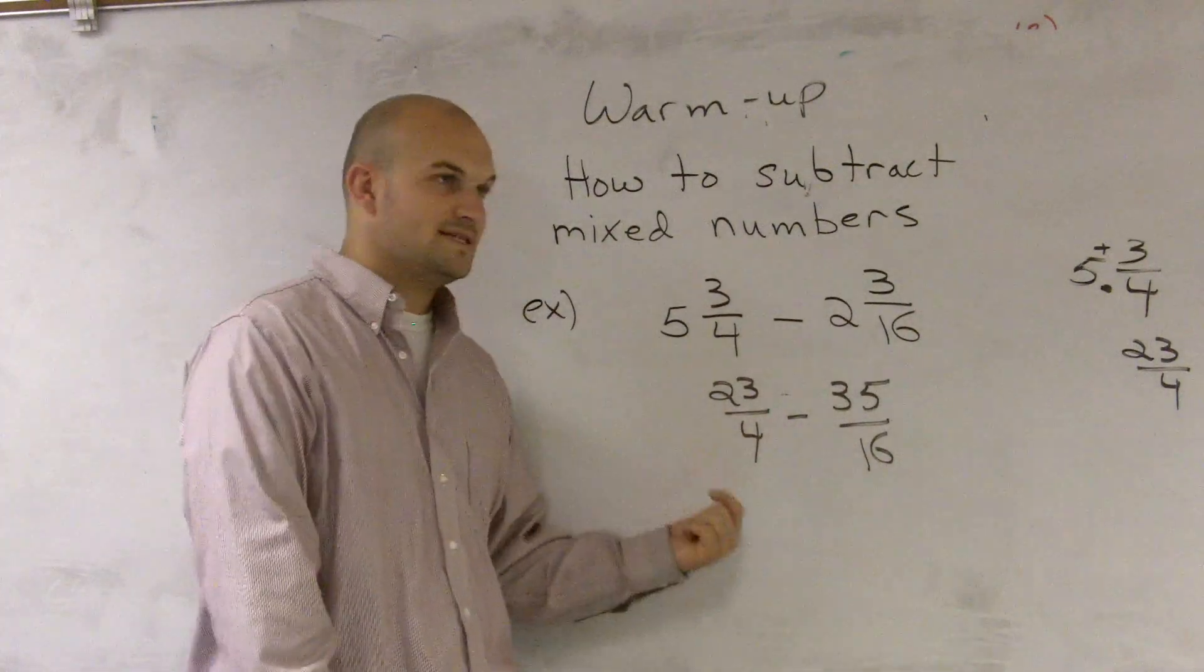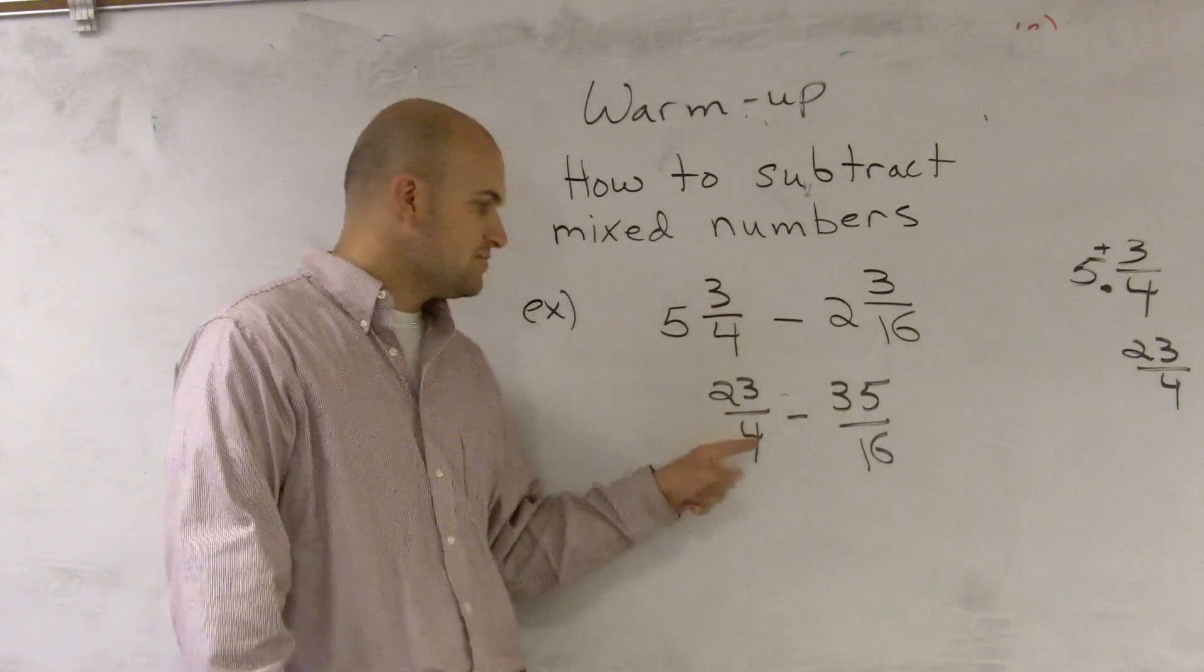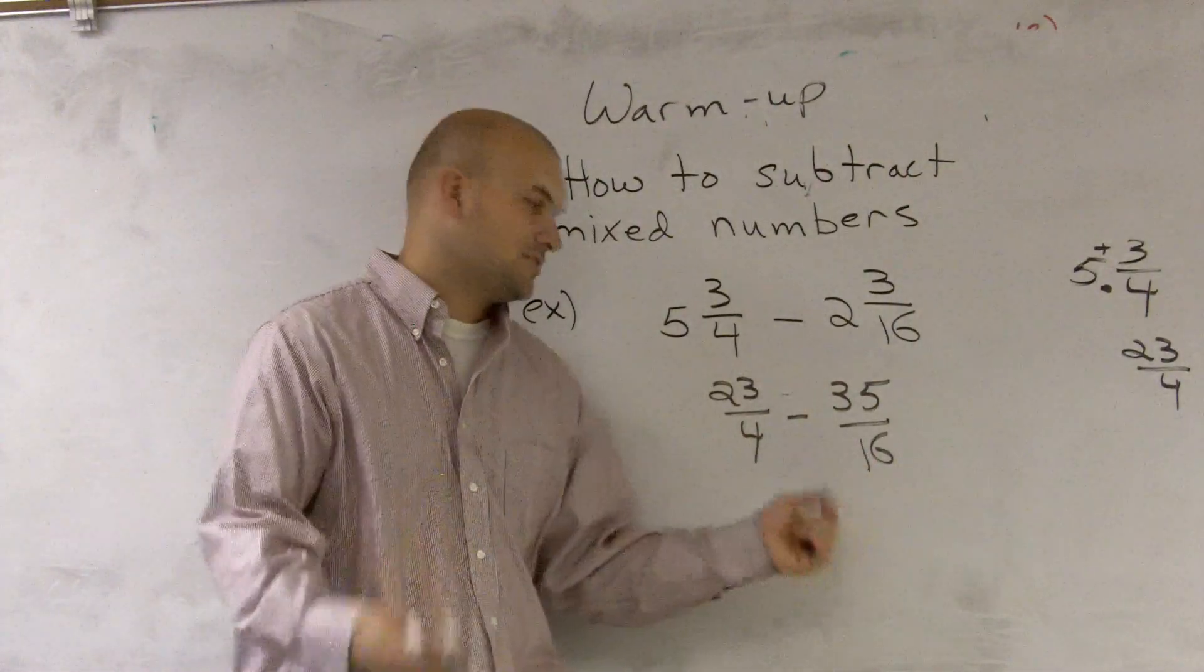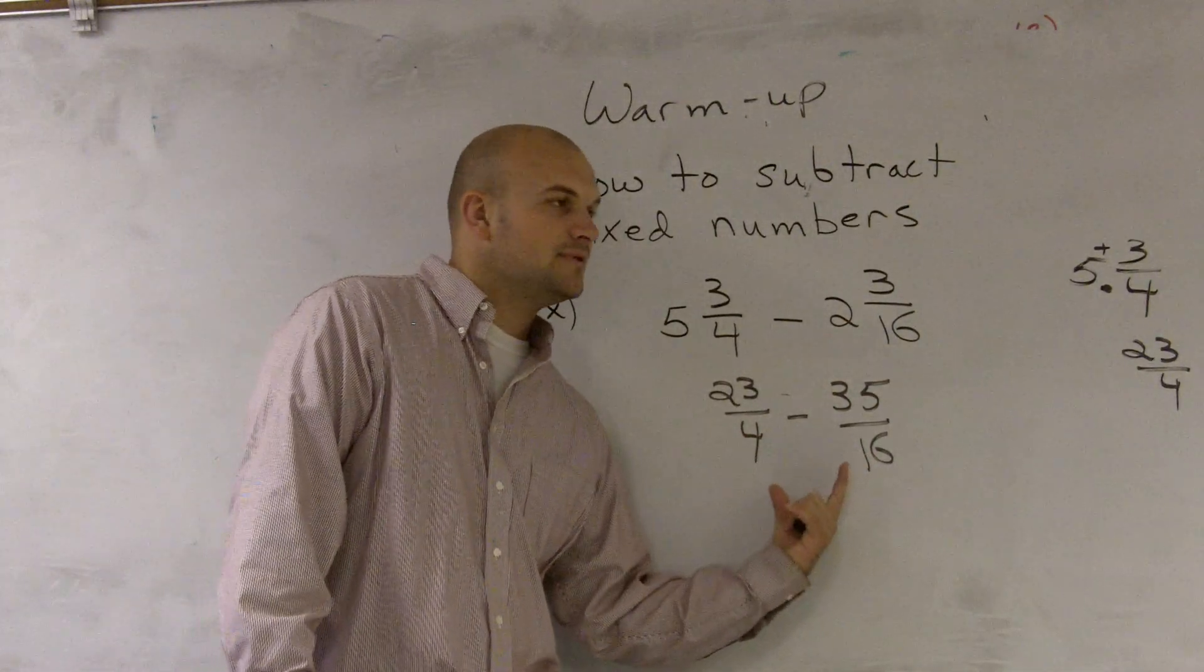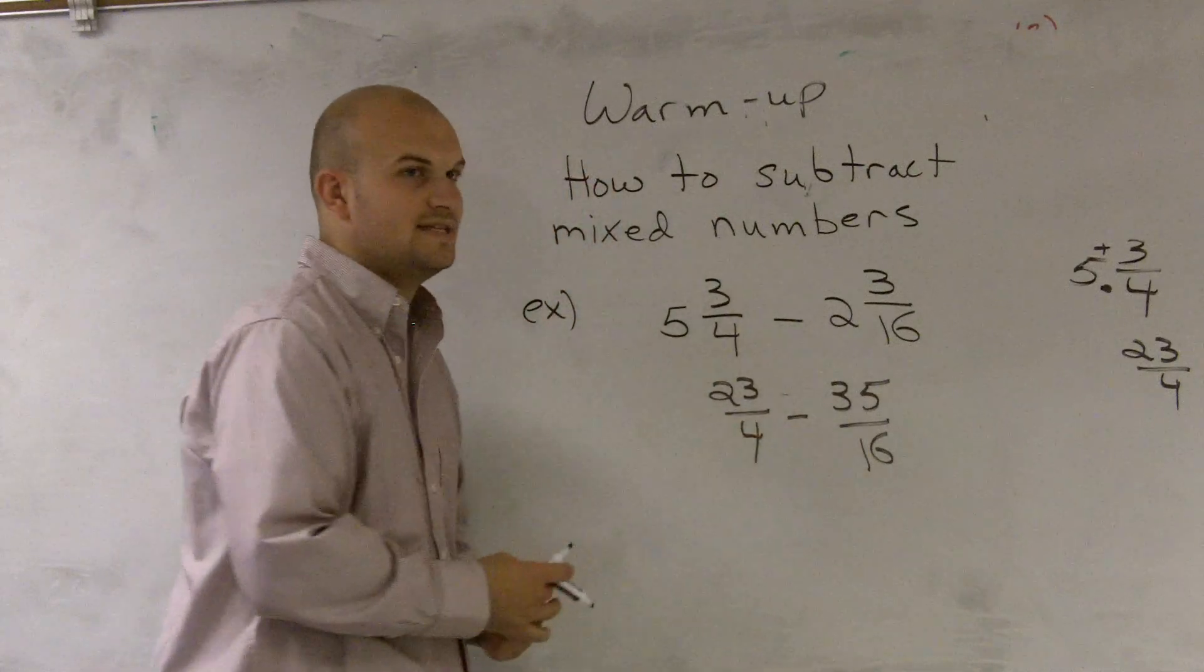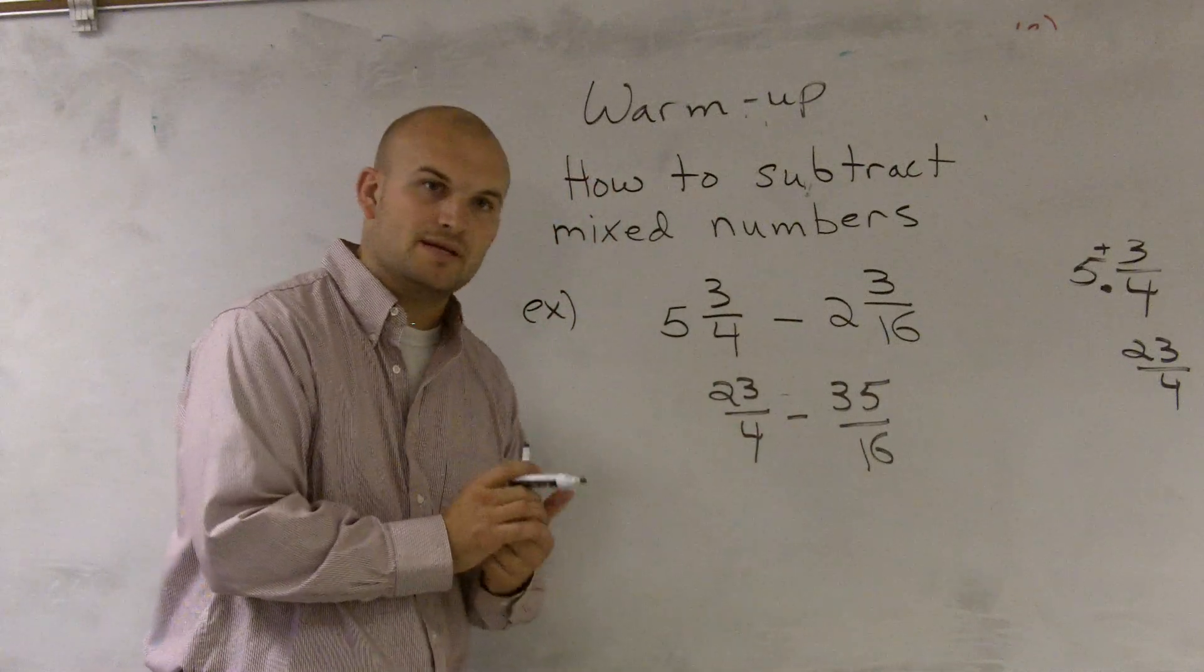Remember, the LCD is their least common denominator. So what we need to find is the multiple of 4 and 16, what is the smallest multiple or the least common multiple that they have in common. Well, I know 4 goes into 16, so our LCD is going to be 16.